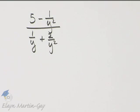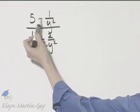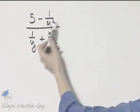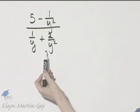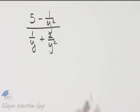How do we simplify this complex fraction? We can use one of two methods. One method is to subtract these two expressions and get a single rational expression in the numerator, do the same thing in the denominator, and then simply divide.